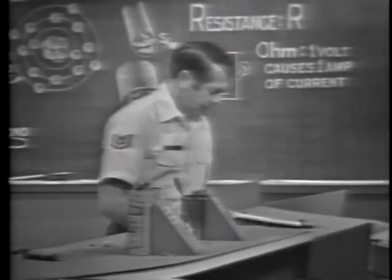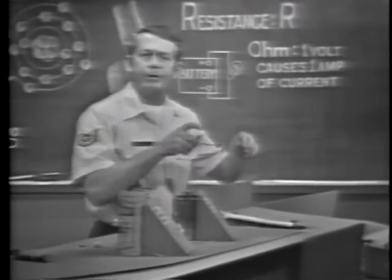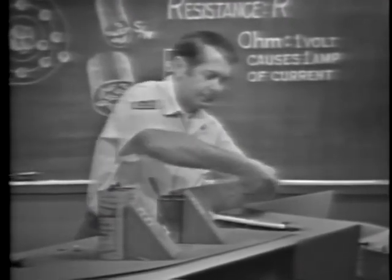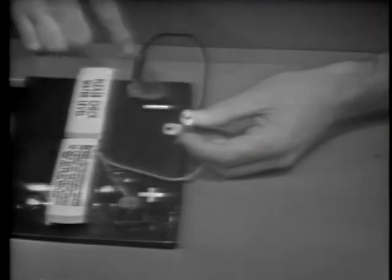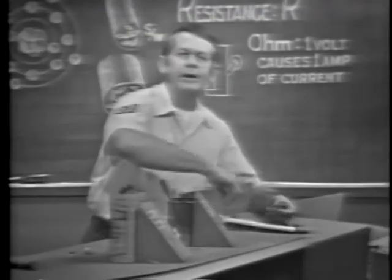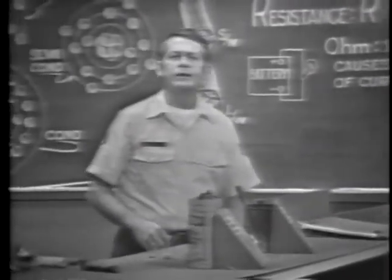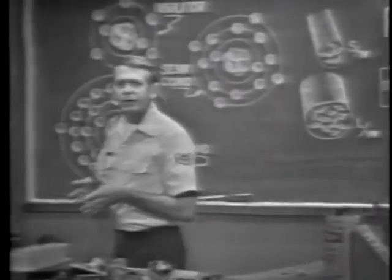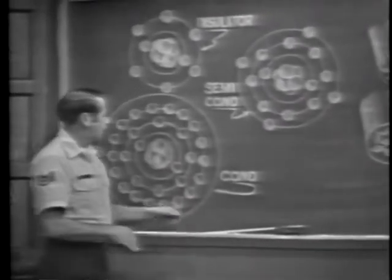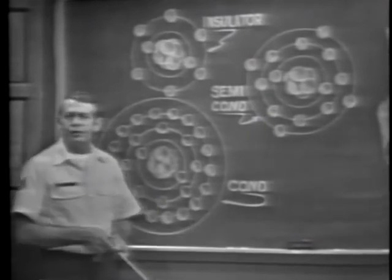We've seen the effects of resistance many times in previous lessons. For example, why didn't this light bulb burn up when we connected it across the battery? It limits the current to the amount required to produce light — if it didn't limit current, it would burn up. So the bulb offers resistance to current flow. It's obvious then that we need resistance to control current. But why do some materials offer a lot of opposition and others very little? Basically, it's the atomic structure of the material.